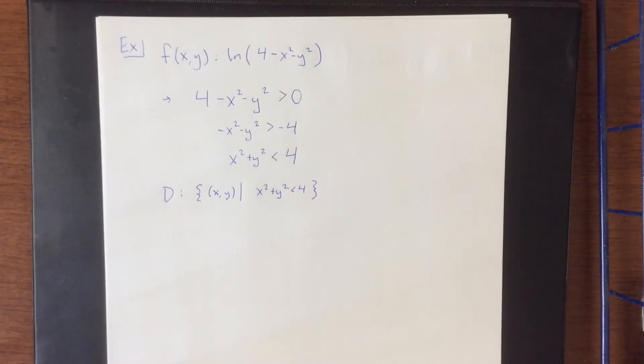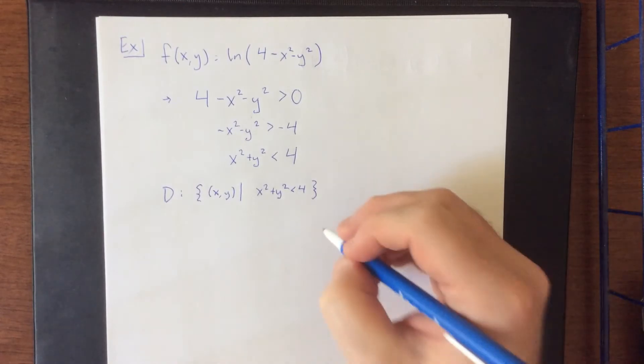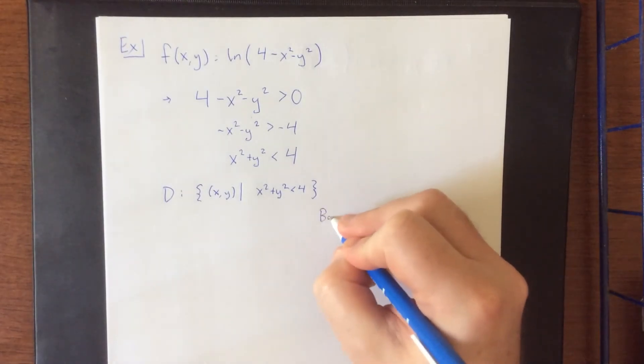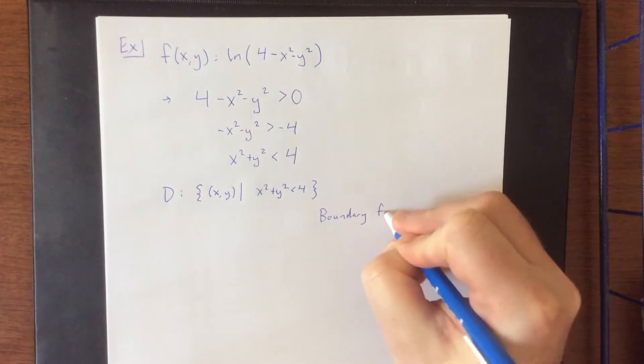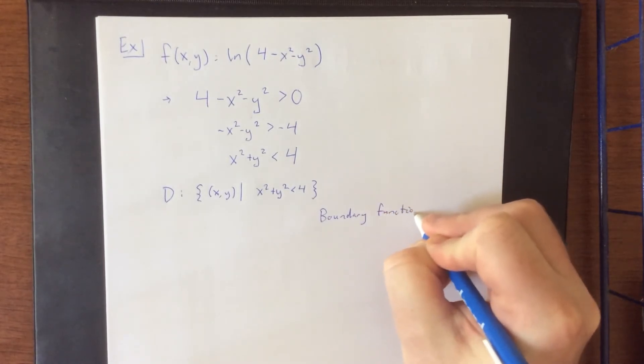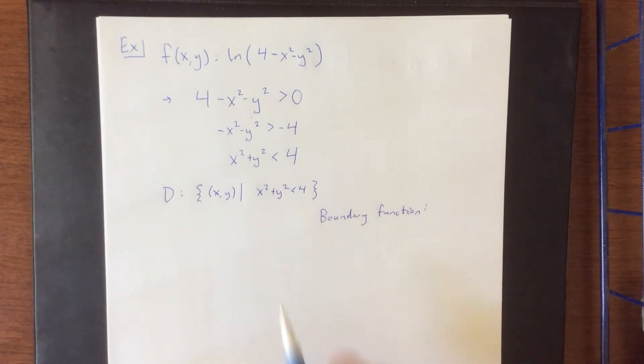Now to graph this within the xy-plane, typically what we would do is start with the boundary function. For the boundary function, we replace any inequality sign with an equal sign.